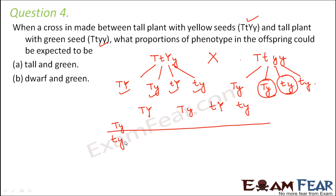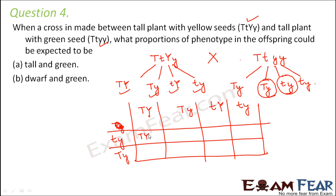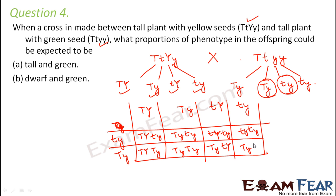We do not write repeated gametes unnecessarily, as it will not help. Now let us make the combinations. The combinations are: TtYy, Ttyy, ttYy, ttyy from the first row, and TtYy, Ttyy, ttYy, ttyy from the second row — giving us eight total combinations in the Punnett square.